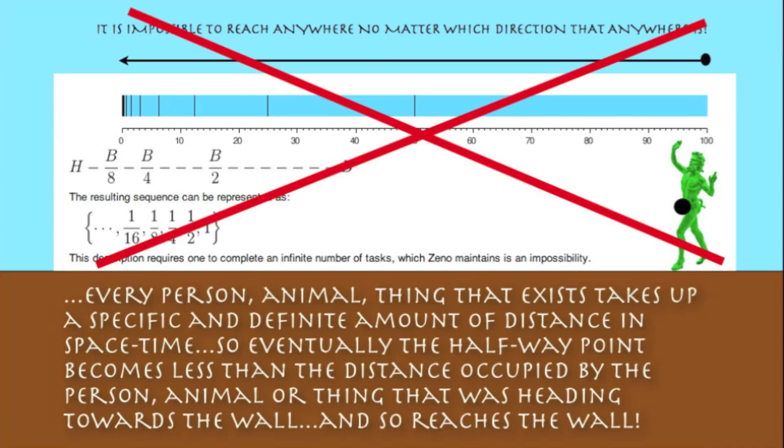Every person, animal, thing that exists takes up a specific and definite amount of distance in space-time. So eventually the halfway point becomes less than the distance occupied by the person, animal, or thing that was heading towards the wall. And so manages to reach the wall.